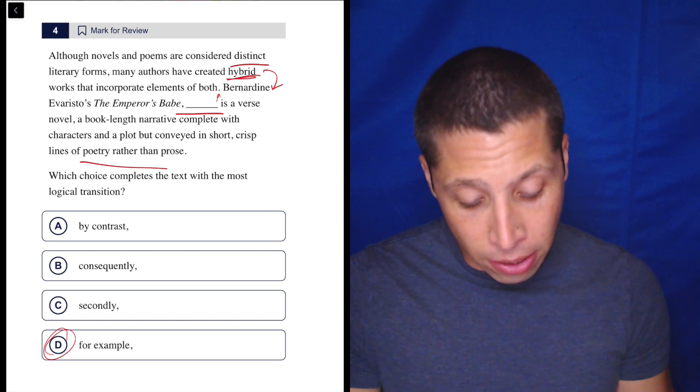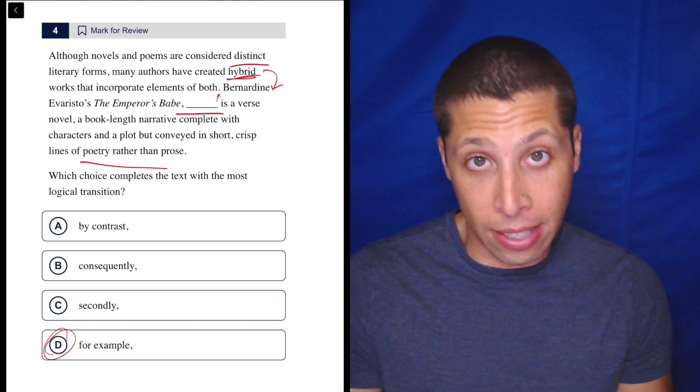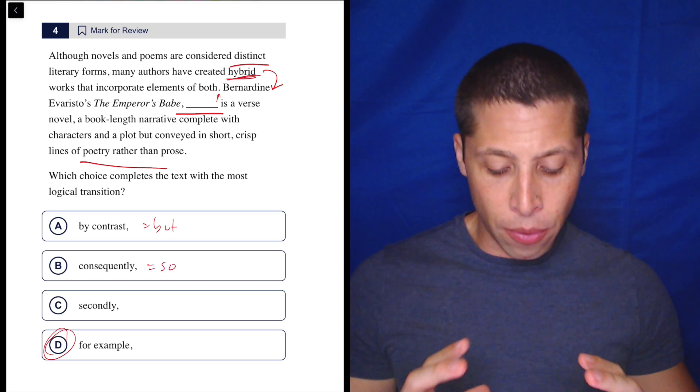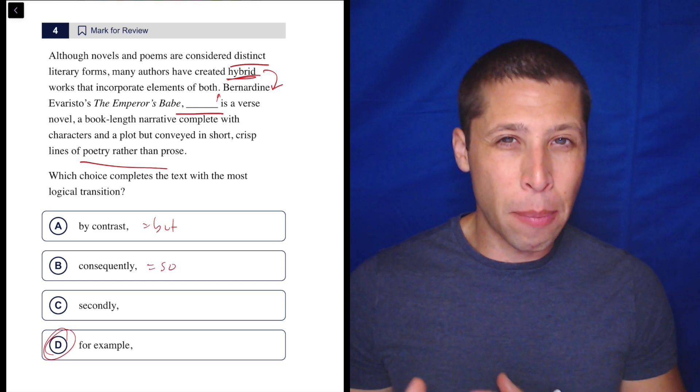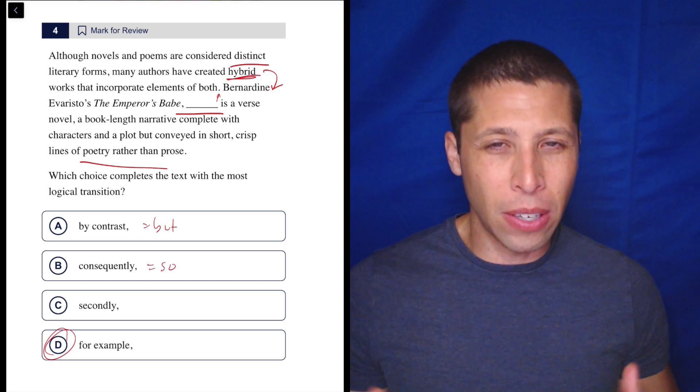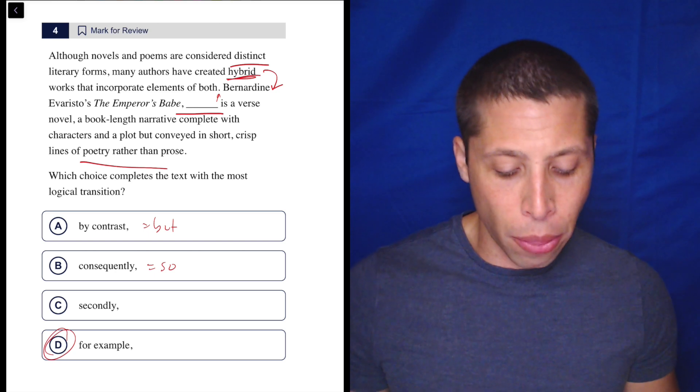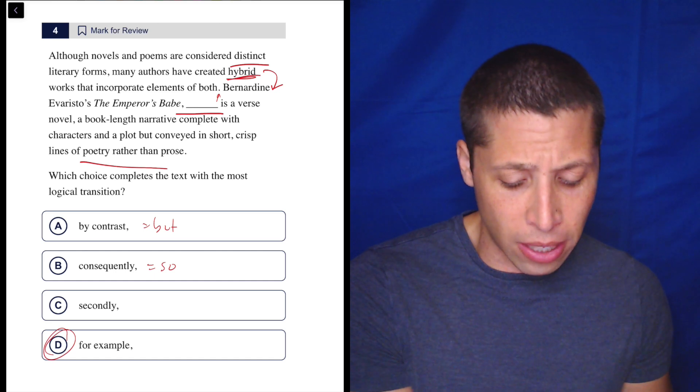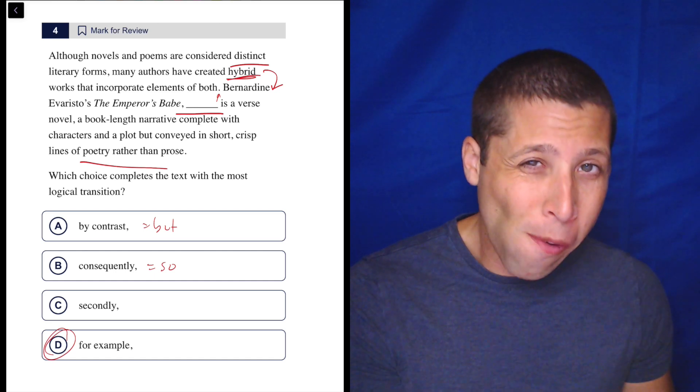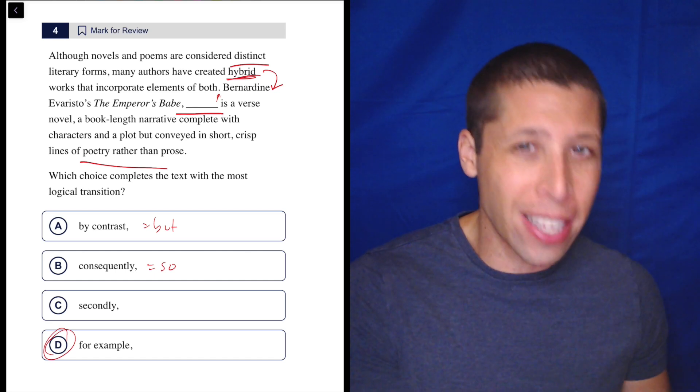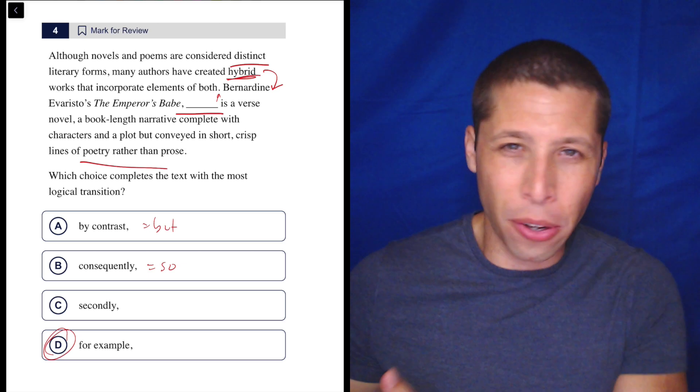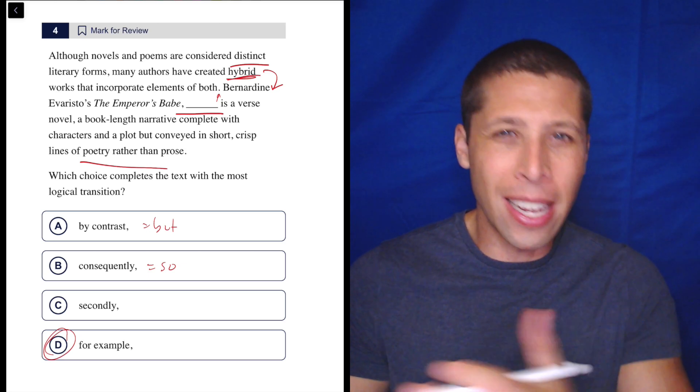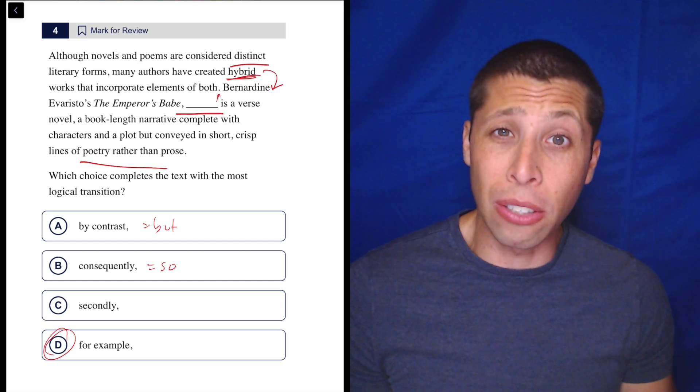So there you go. Now why isn't anything else? It's not a contrast because it is, like I said, an example of that. Consequently means so—now that might be tempting, but I think it's a good example where putting the 'so' in it feels like it doesn't make sense. Many authors have created hybrid works, so Bernardine Evaristo's novel is a verse novel? It's not like she created that because other authors made other hybrid novels—it's an example of that. The 'so' just feels unnatural to me.